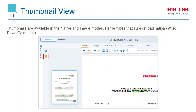In the lower left drawer, thumbnails are available for paginated records, such as Word documents and PowerPoints. The thumbnail view can quickly be scrolled through to locate term hits and highlighting in native mode, or any redactions present in image mode.